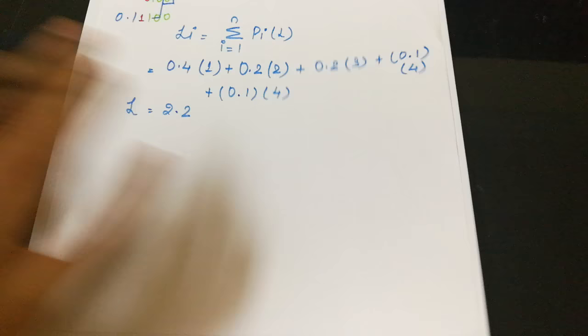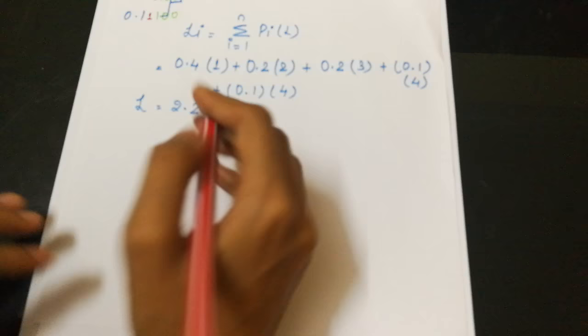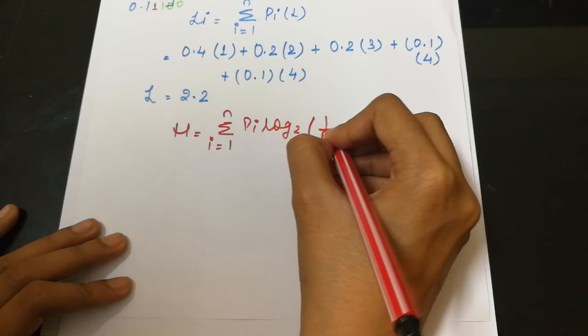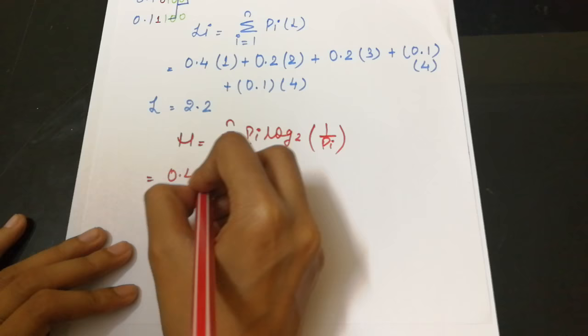Now we start by entropy calculation. Entropy is given by summation of i equals 1 to n, pi log base 2, 1 upon pi. This will give pi as your probabilities. 0.4 log base 2, 1 upon 0.4.